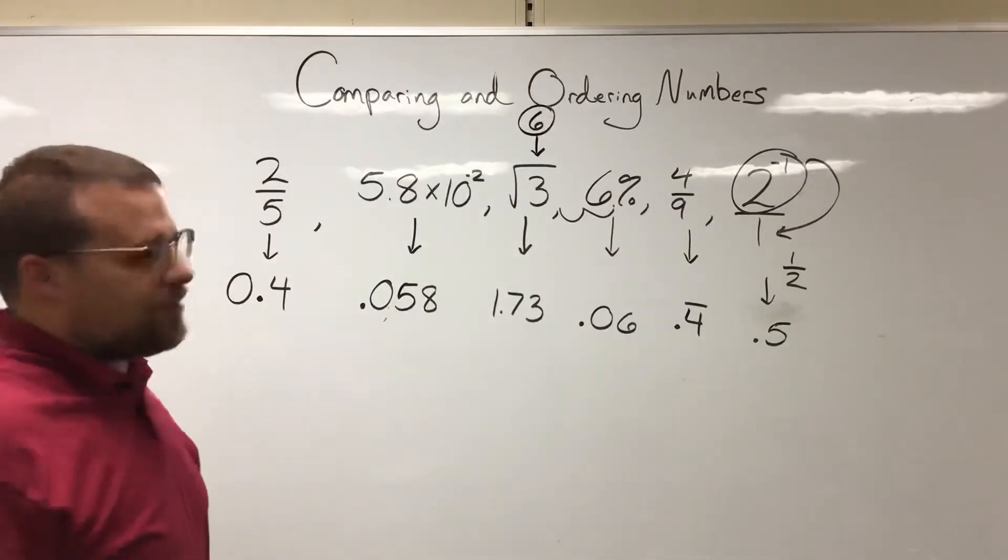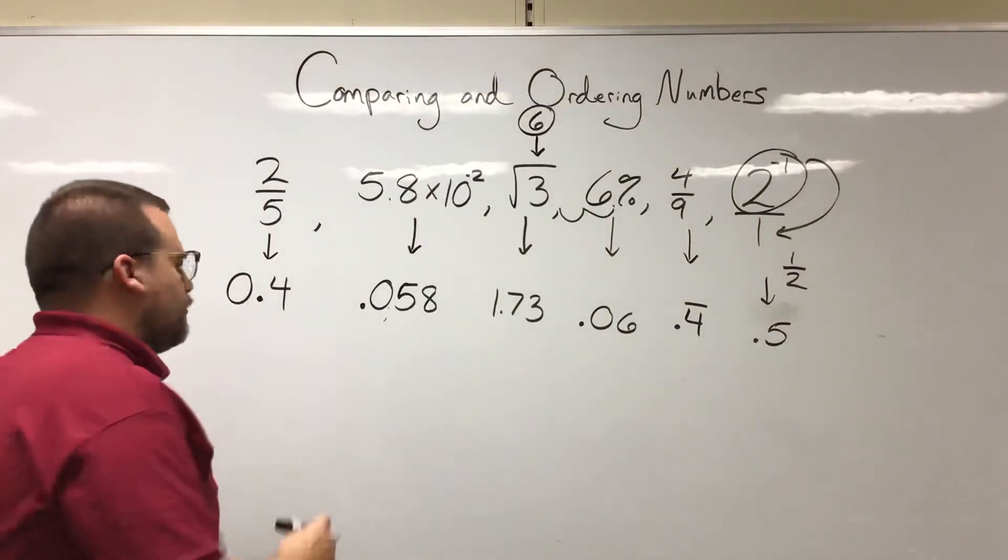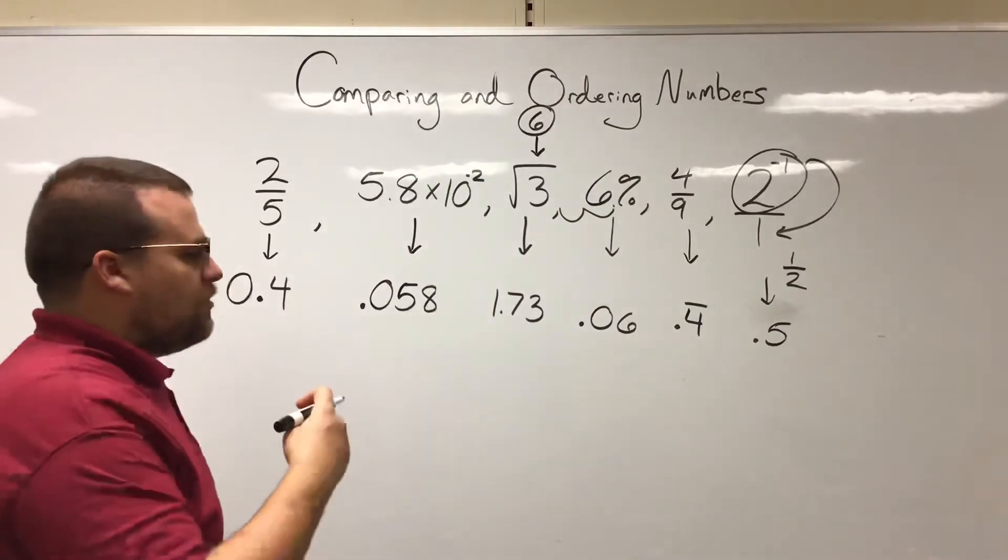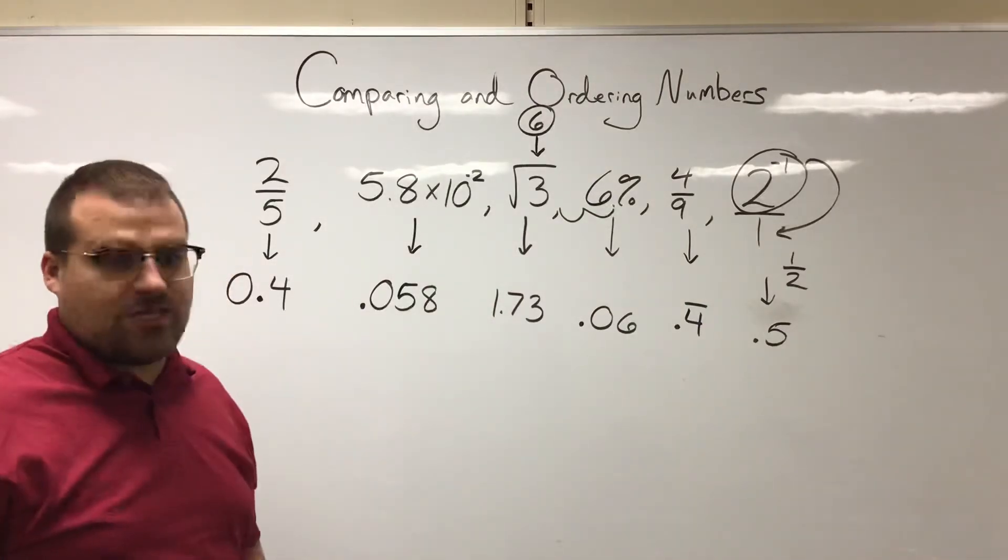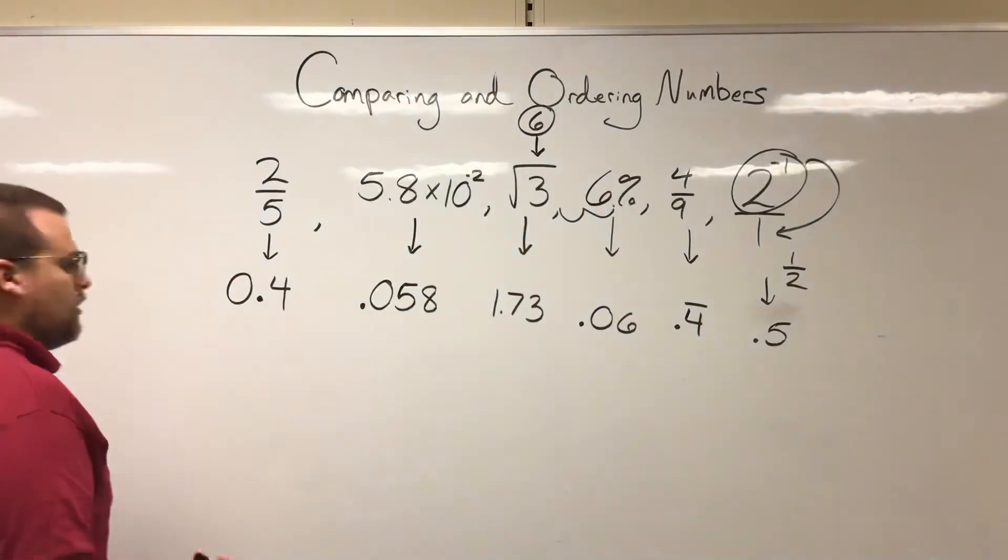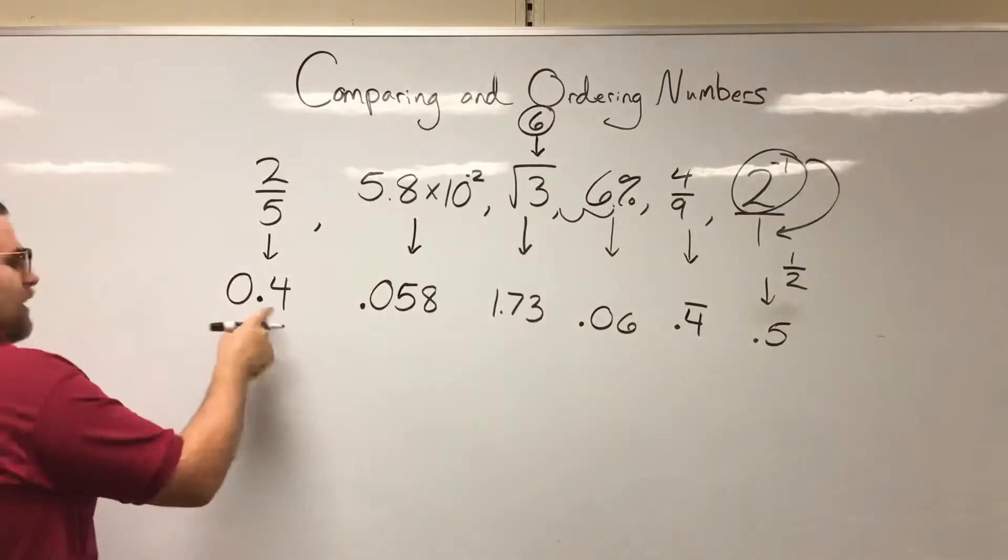Now let's take a look and see what the smaller ones are. What you always want to do is, the way you can think about this, is the more zeros you see after the decimal, like immediately after the decimal, the smaller the number is.